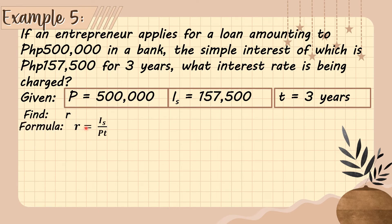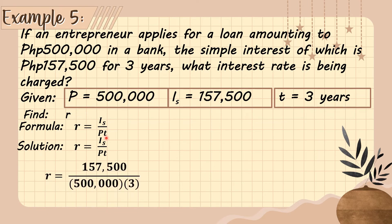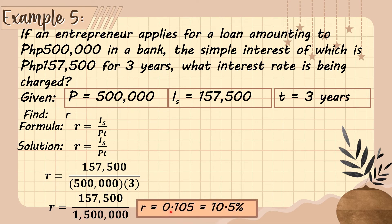The formula is r = I_s ÷ (P × t). Substituting: 157,500 ÷ (500,000 × 3) = 157,500 ÷ 1,500,000 = 0.105, which is equal to 10.5 percent. So the bank charges an annual interest rate of 10.5 percent.